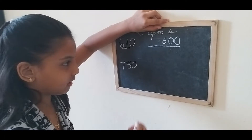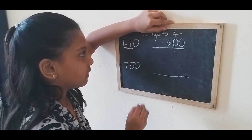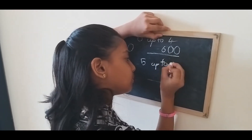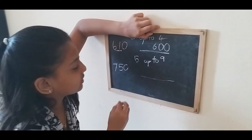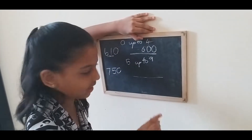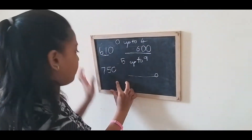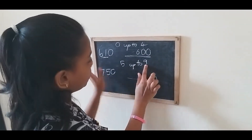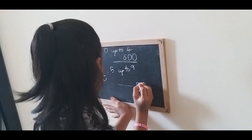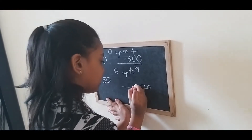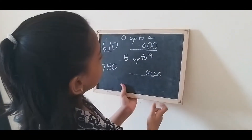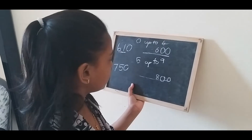The next one is seven fifty. We do not check the ones place — we put zero there. The tens digit is 5, which is five up to nine, so we put zero in the ones and tens place and add one to the hundreds place. So the answer is eight hundred.